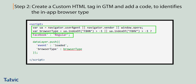Step two: create a custom HTML tag in GTM and add code to identify the in-app browser. The code fetches the user agent of the current browser. It is a known fact that the Facebook in-app browser has a unique keyword for its identification, flashing on the screen right now. If any of these keywords is present in the user agent, we set the browser type as 'Facebook'; otherwise, we set it to 'regular' and pass it in the data layer.